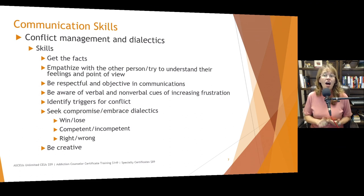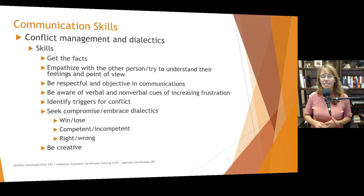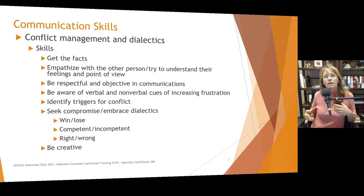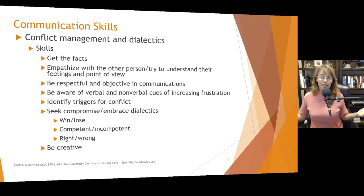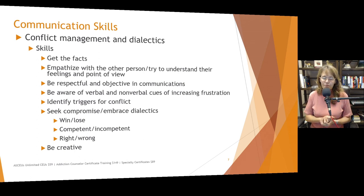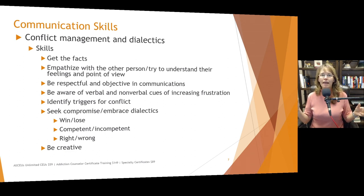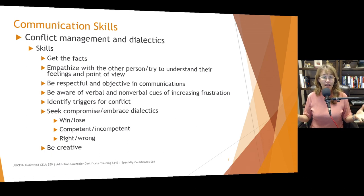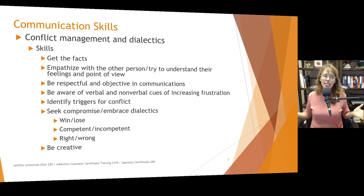We need to identify triggers for conflict when working with people in relationships. We need to seek compromise and embrace dialectics — instead of seeing everything as win-lose, try to see how we can make it win-win. Instead of seeing somebody as either competent or incompetent, see how they are competent in their own way. There's objective right and wrong, morally right and wrong, all kinds of different right and wrongs — so we want to see how both perspectives can be right in their own way, and sometimes we just need to be creative.